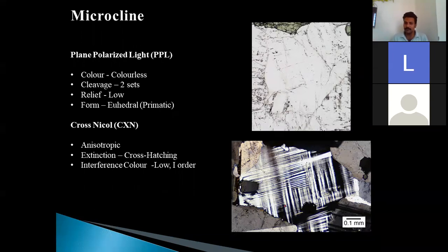The most distinguished character of microcline is the extinction. The extinction pattern shown by microcline is cross-hatching. You can see in the picture, the round picture where you can see that the cross-bands of black and white can be accessed. These cross-bands are nothing but the cross-hatching. This is the unique type of extinction shown by microcline. The interference color of microcline is low first order.